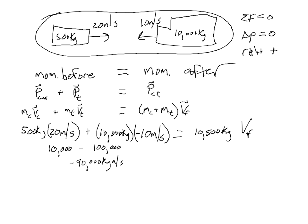We need to divide both sides by 10,500 kilograms to get the final velocity of the car and the truck. The kilograms will cancel, and I'm going to end up with meters per second, which is, of course, the correct units for a velocity. Then we'll need our calculator to divide 90,000 by 10,500.